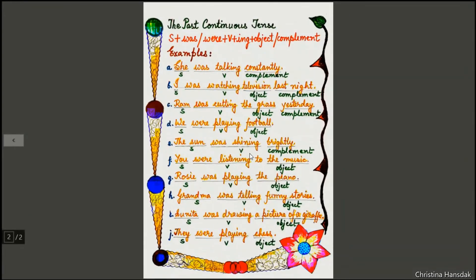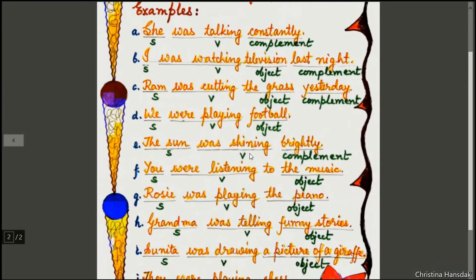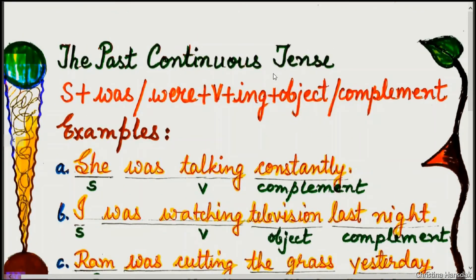Now let's step into the past continuous tense. The formula for the past continuous tense is: Subject + was/were + verb with additional -ing + object or complement.